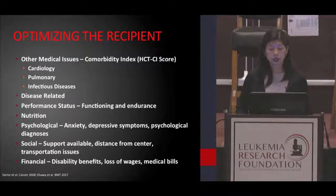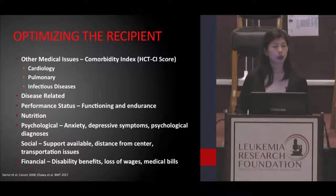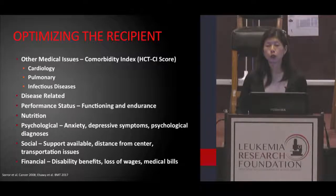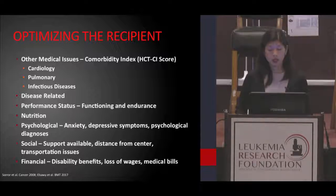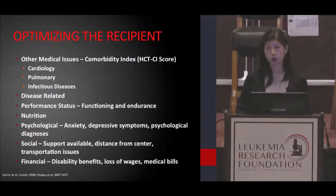We also look at performance status — functioning and endurance — which has been clearly shown to be very important in transplant outcomes. In addition, we assess nutrition, psychological status, and social support. There is no person who can undergo a transplant on their own; it always requires a caregiver support system, and that is established and clarified before the transplant can go forward. Lastly, we also look at the financial situation to make sure that all medications and services will be affordable and available after the transplantation.